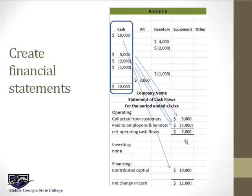The cash flow statement has three sections: operating, investing, and financing. Financing includes transactions with owners — like receiving $10,000 cash — and getting or repaying debt. Investing is where you buy or sell long-term assets or investments; none of that happened here. The rest is operating: selling to customers and using resources to serve those customers, which is where most bank activity shows up.